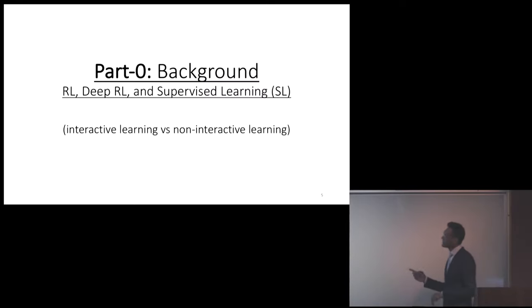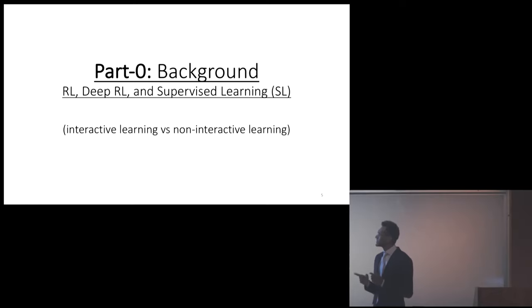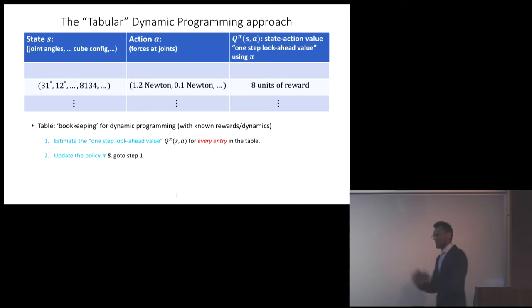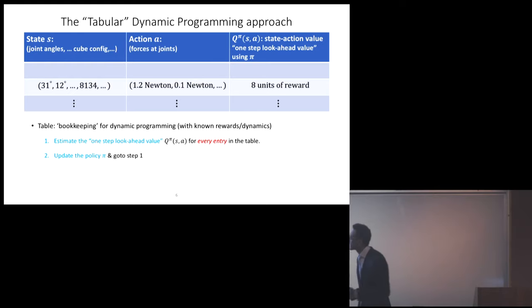Before we jump into details, let's look at a little background for how we think about reinforcement learning, deep RL, and supervised learning — comparing the challenges in interactive learning to non-interactive learning. Let's start with the classical dynamic programming approach. The dynamic programming approach is we make a gigantic table. The first column is the states we're in; in this hand manipulation task, those are joint angles and the configuration of the cube. This is clearly an infinite table.